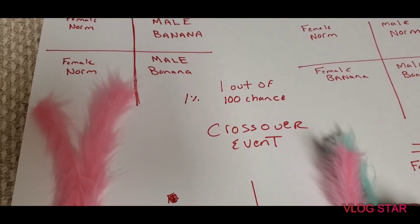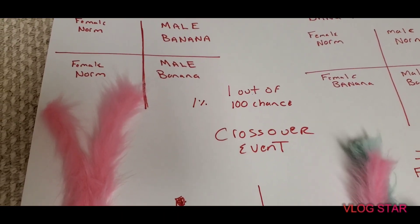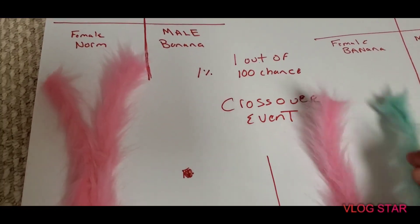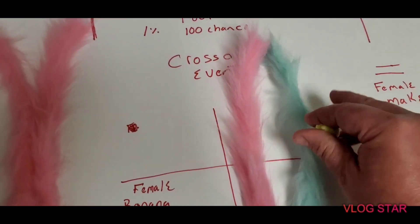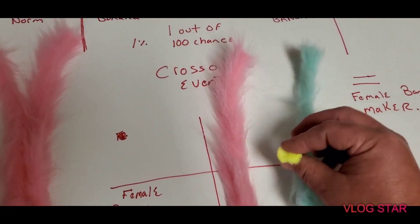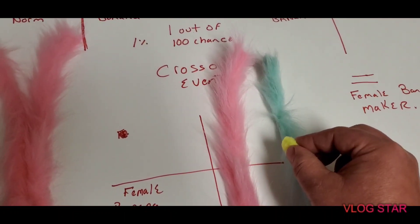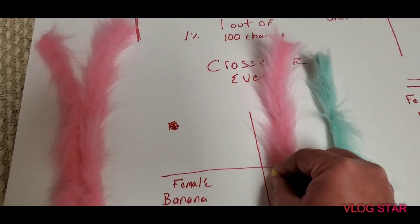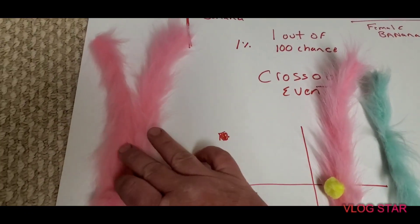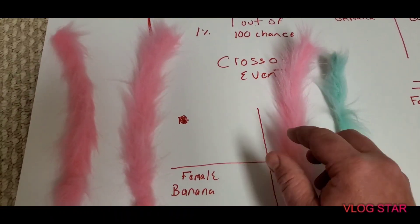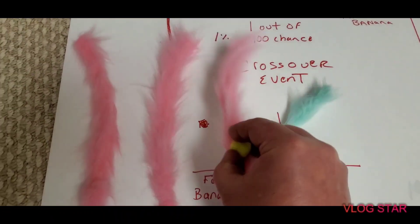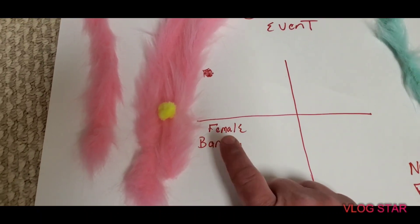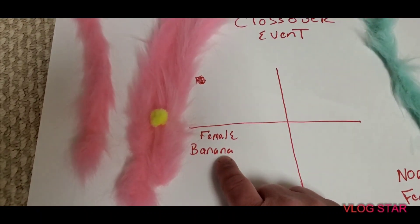Here's where it gets really interesting. Once out of every hundred — roughly a 1% chance — you can have what they call a crossover event. Now the banana gene, instead of riding on the male Y chromosome, crosses over to the X chromosome, attaching to the female side. So even though you're going back and forth, you now end up with a female banana.